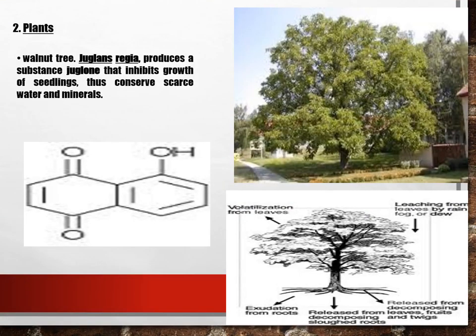Another important example of amensalism is the walnut tree, Juglans regia. It produces a chemical known as juglone which inhibits the growth of seedlings nearby. As a result, no other plant grows around the walnut tree, which benefits it because competing plants would otherwise compete for food and minerals. So it produces a chemical that does not allow the growth of others — this is also known as amensalism.